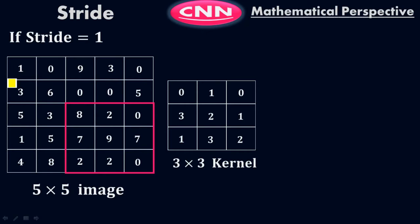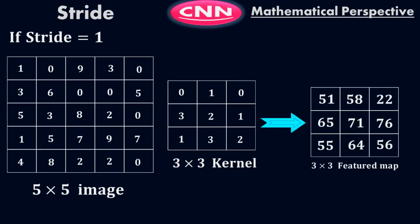Once you reach this point, leave one row and start from here, then leave one column, then leave the second column. Then leave the second row, start from here, then leave one column, start from here, then leave the second column, start from here. So stride equals 1 means leave one column and one row, one column and one row, one column and one row. At the end you will get a 3x3 feature map — this is the final result, a 3x3 matrix.